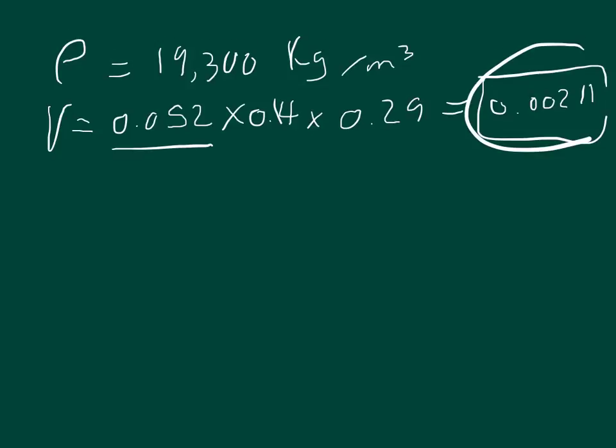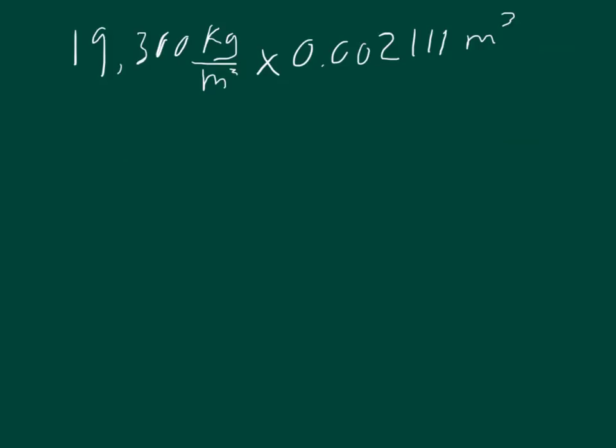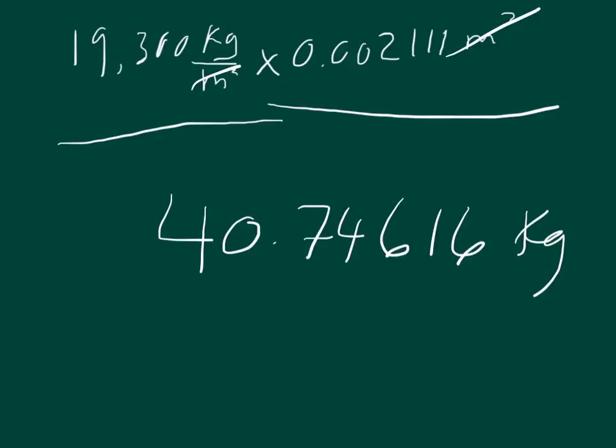And all we got to do is plug these into our equation that's solved for the mass. Here's the numbers, we got 19,300 kilograms per cubic meter multiplied by 0.00211 meters cubed, and so the meters cubed will cancel each other out and we'll be left with an answer of 40.74616 kilograms.